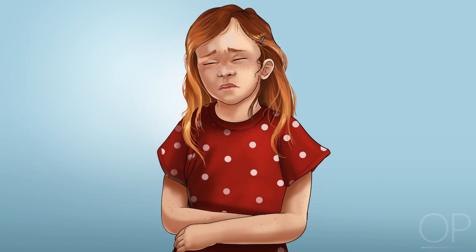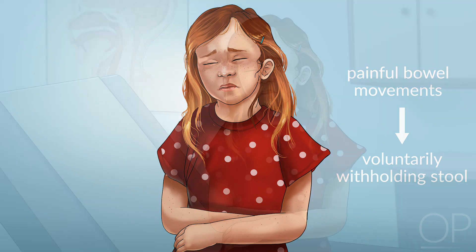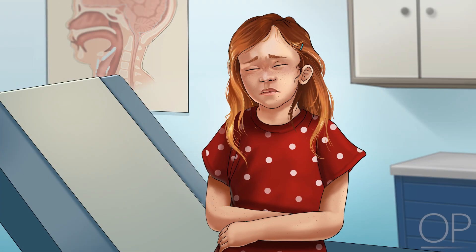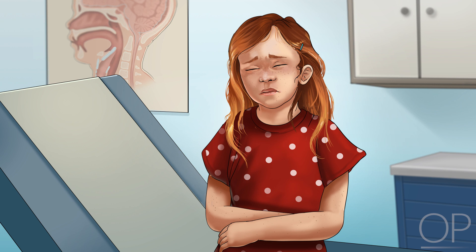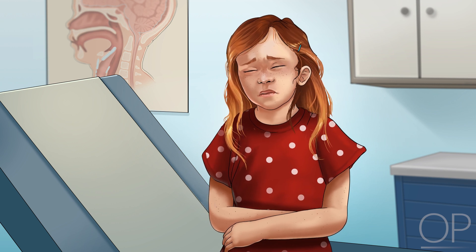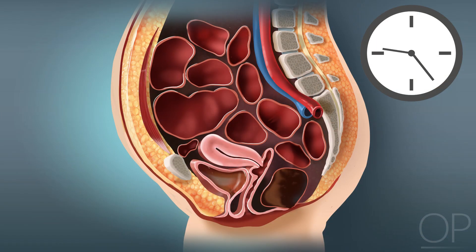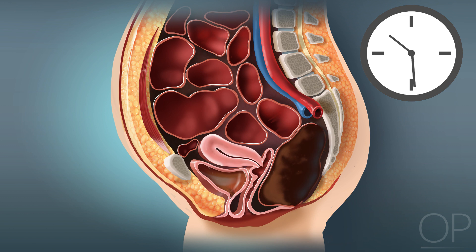Functional constipation is caused by painful bowel movements that lead to the child voluntarily withholding stool. The child will contract the anal sphincter or gluteal muscles by stiffening the body, rocking back and forth, or fidgeting with each urge to defecate. Prolonged fecal stasis can lead to excessive reabsorption of fluid, causing stools to become harder, larger, and more painful to pass.